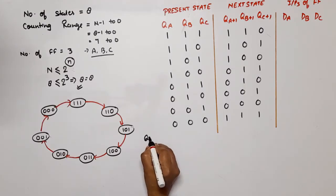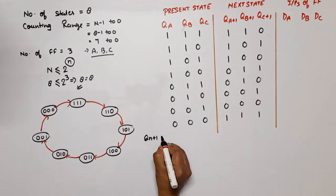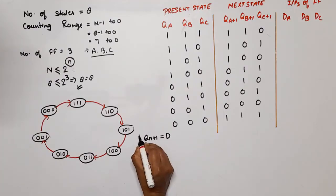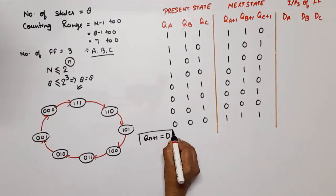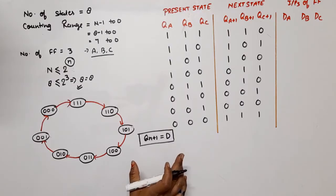According to this, now what we need: dA, dB, dC. So we all know that in case of D flip-flop, next state means Qn+1 is equal to D. Means the next state of D flip-flop is the same as the input.